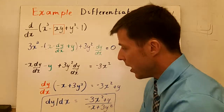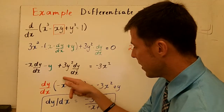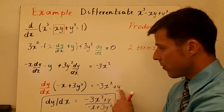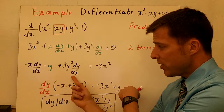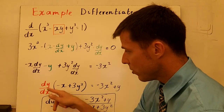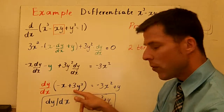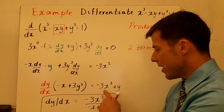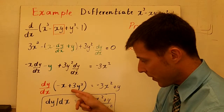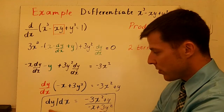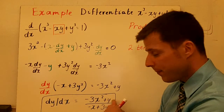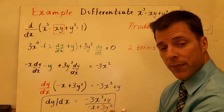I factored out the dy/dx, and I also moved the y term over by adding y. So when you have these two terms, I factor out the dy/dx and I'm left with negative x plus 3y squared, and that equals negative 3x squared plus y. To get dy/dx by itself, divide by this term, and I've done that here. So dy/dx by itself is negative 3x squared plus y over negative x plus 3y squared — that's the derivative.